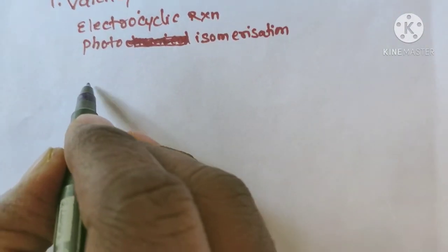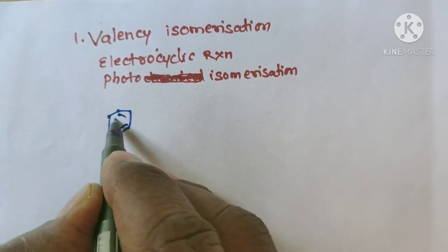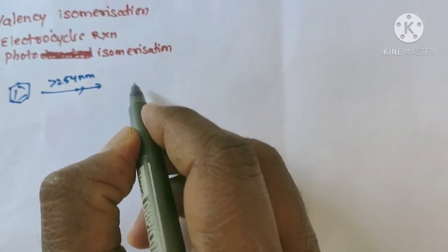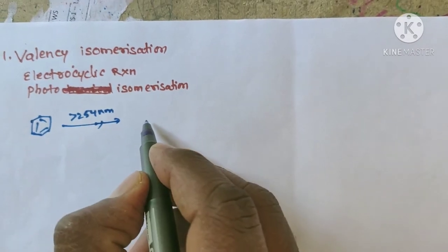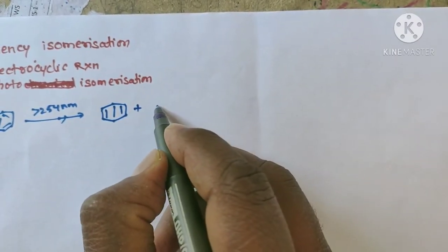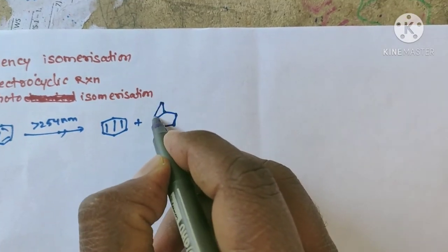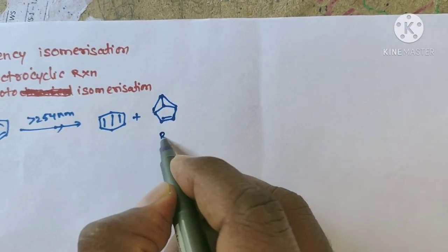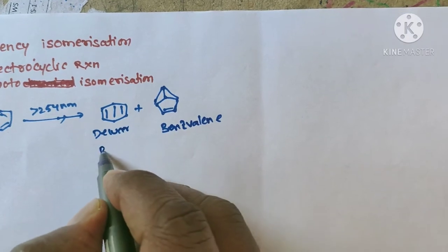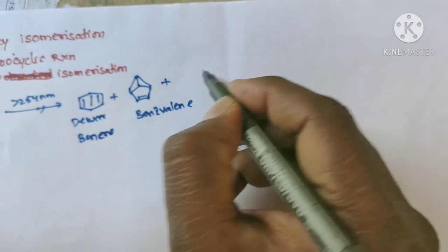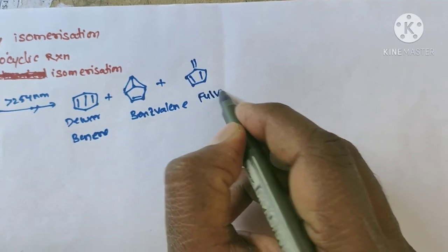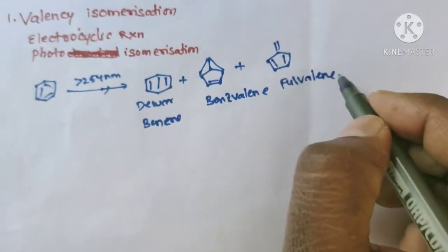Benzene is irradiated with light whose wavelength is greater than 254 nm. Then we get three different products. The first one is Dewar benzene, the second one is benzene, and the third one is fulvene. So like this, we get three different products. Now we go for the mechanism.